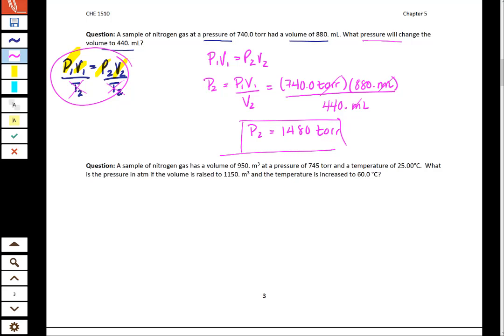Let's look at another one. In this problem we are given the fact that we have a volume to start with, a pressure to start with, and a temperature to start with. What is the pressure in atmospheres? So this is what we're searching for. The volume was raised and the temperature also increased. In this case we are absolutely using the Combined Gas Law because we have all of those variables.